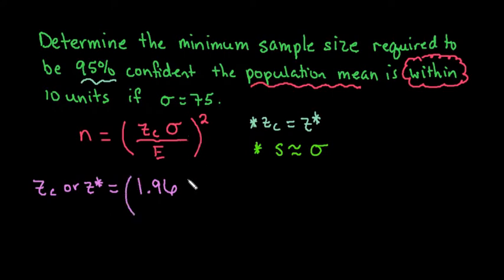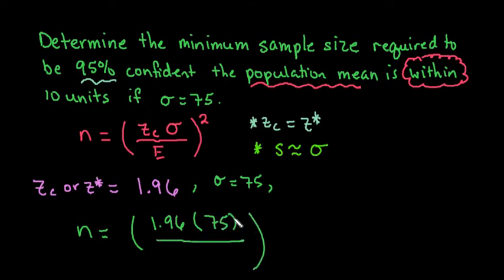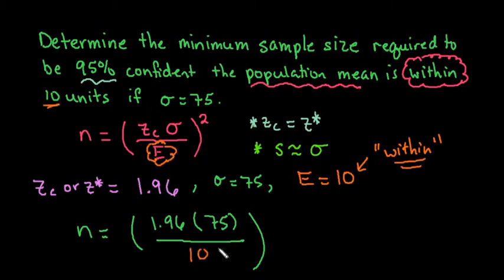Sigma is 75, so we plug in 75. Sorry, I'm getting ahead of myself—let me use the whole formula. n equals, and we plug in our values. We know sigma is 75 because that was given. The error is the 'within' part—when you're reading the word problem, the 'within' part is always your margin of error. So the error is 10.